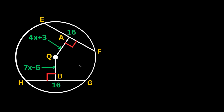We're given a bunch of information here. We have this chord with a length of 16, and another chord below also with a length of 16. The distance from the lower chord to the center is 7x minus 6, and the distance from the upper chord to the center is 4x plus 3.